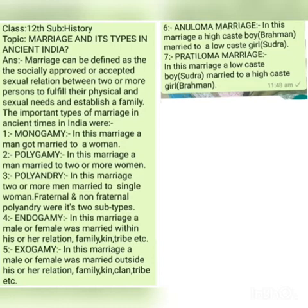Number five, exogamy. Exogamy was a marriage in ancient times in which a male or female was married outside his or her family, relation, class, and kin. In exogamous marriage, the number of relatives used to increase as the marriage took place outside one's own relation or kin.